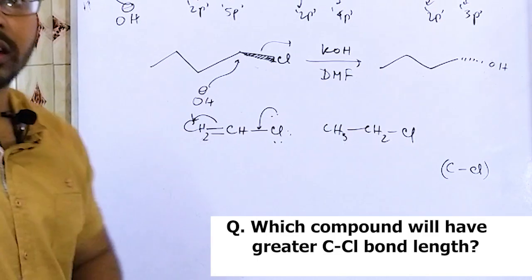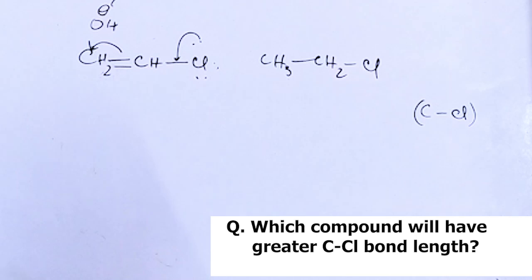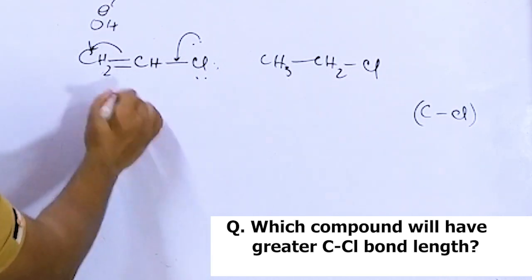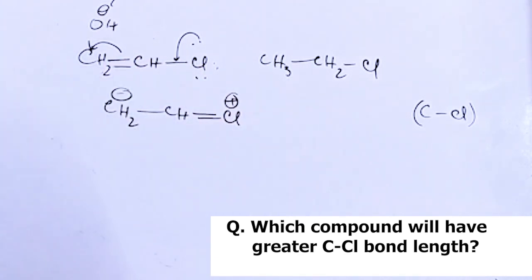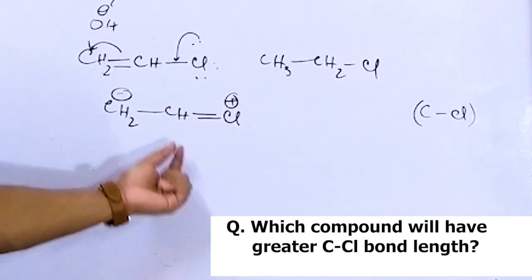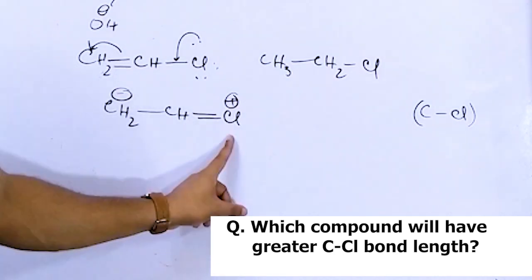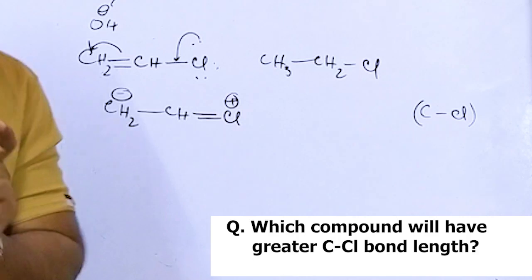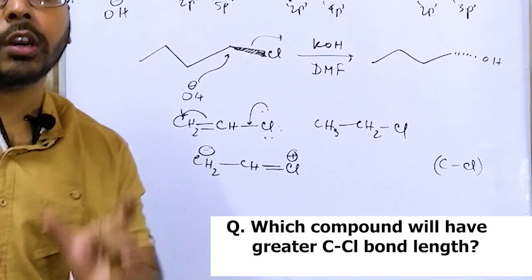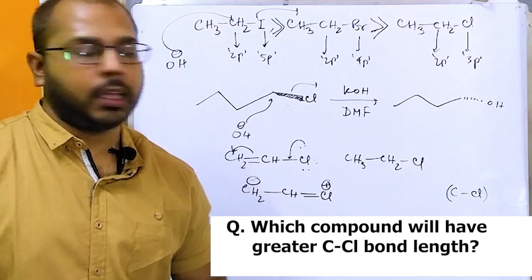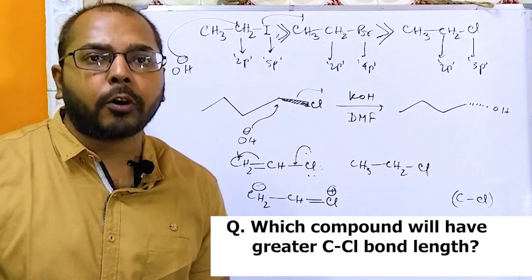In the case of vinyl chloride, resonance can take part, so the structure gets double bond character in the C-Cl bond. But in ethyl chloride, the C-Cl bond remains a single bond because there is no scope for resonance.